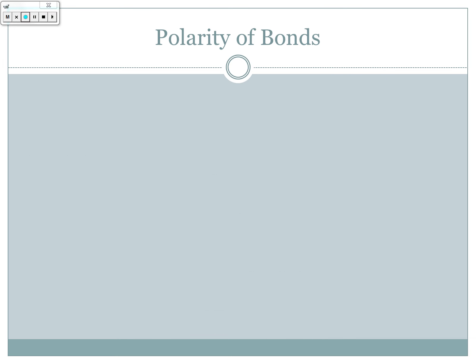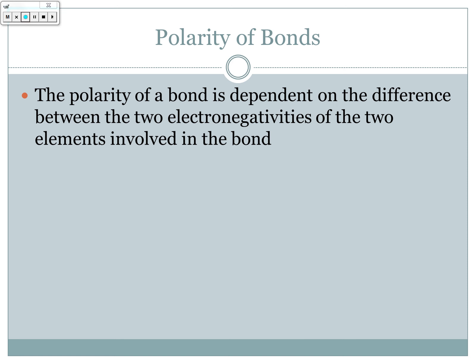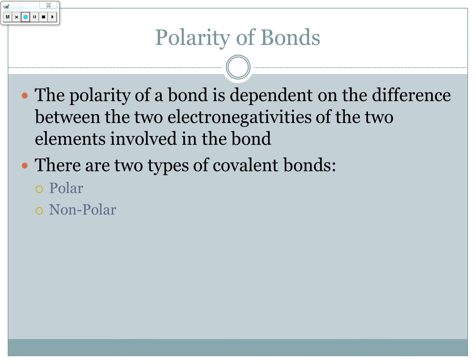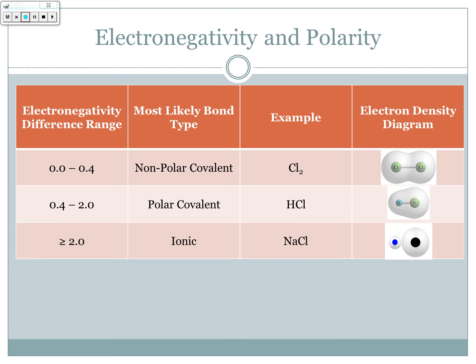The polarity of a bond is dependent on the difference between the electronegativities of the two elements involved, and this dictates what type of bond is formed. We have a table here comparing bond types to electronegativity differences. If the difference is between 0 and 0.4, it's a nonpolar covalent bond. Between 0.4 and 2.0, it's a polar covalent bond. If the difference is greater than or equal to 2.0, it's an ionic bond — one element likes the electrons so much more that it actually steals them.